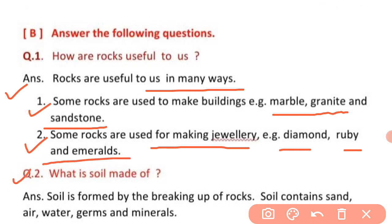Next question: what is soil made of? Soil is formed by the breaking up of rocks. Soil bani hai rocks ki tootnay se — jab rocks break down hote hain, soil form hoti hai. Soil contains sand, air, water, germs, and minerals.